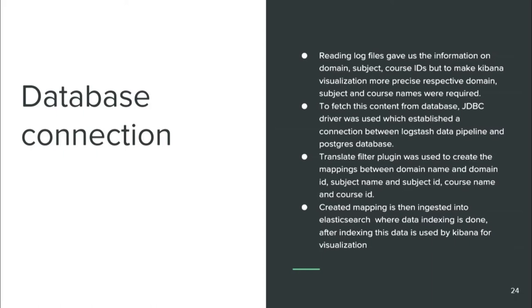After reading the log files, we obtained course ID, domain ID, and subject ID. To make Kibana visualization more precise we also needed their names, which were stored in the PostgreSQL database. We used a JDBC driver to establish a connection between Logstash and the PostgreSQL database to fetch that information. Then we used a translate filter to create a mapping between course ID and course name, domain ID and domain name, and so on. The whole processed data was then passed to Elasticsearch for indexing, and Kibana fetched it for visualization.